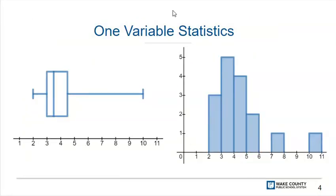In the first three lessons of the unit, you will represent one variable data with box plots and histograms. You will describe data distributions and calculate the mean, median, standard deviation, and interquartile range of the data. You will interpret these measures of center and spread in context and use these measures to compare data sets.